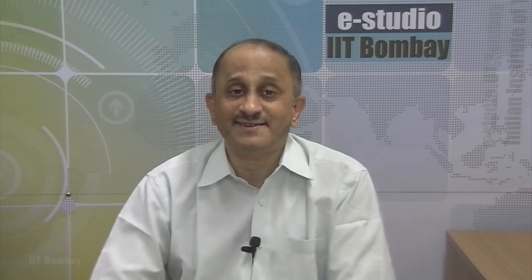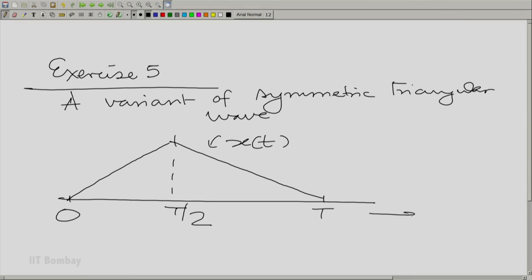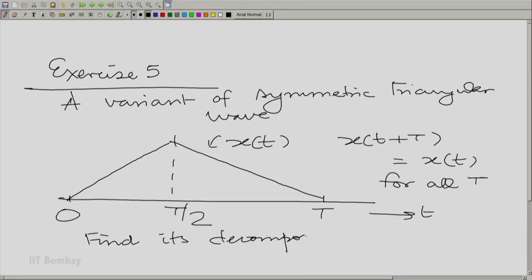You know there is one more symmetric triangular wave that we can consider. Let me draw that. So, exercise 5: a variant of the symmetric triangular wave that looks like this. In one period, it only rises and falls. It does not go negative. Find its decomposition. Compare. That will be the interesting part. Compare with exercise 3. What differences do you see?